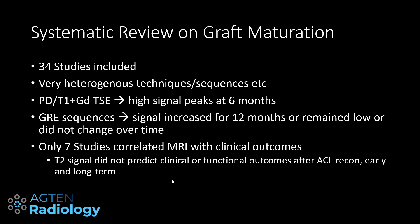Only seven of the 34 studies correlated MRI with actual clinical outcomes. The conclusion was that T2 signal did not predict clinical or functional outcomes after ACL reconstruction, either earlier or long term. Because of this heterogeneity and lack of good studies, there is no reliable biomarker yet — though parameters like T2 star or MRI fingerprinting may help, and perhaps artificial intelligence as well. The key takeaway is that we can't really make good clinical decisions based solely on graft signal intensity.